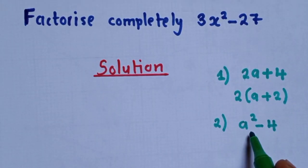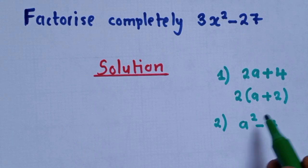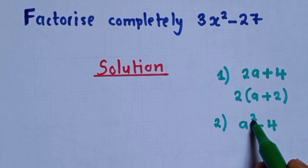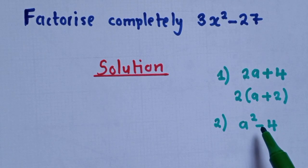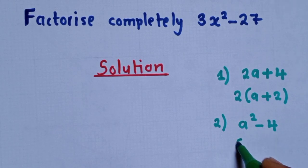So how do we factorize this one? How do we get to know that we are supposed to use difference of two squares? It's the power 2. Can you see the power 2 here? This power 2 and a minus sign. It means you need to use difference of two squares for you to factorize.